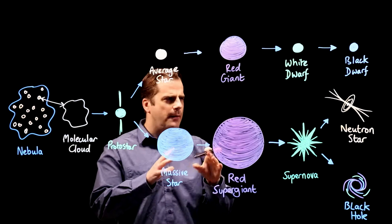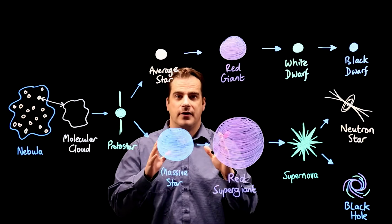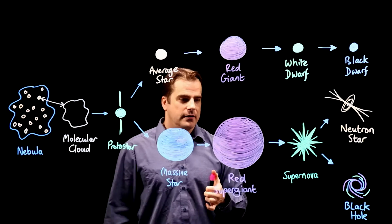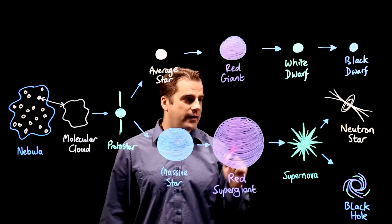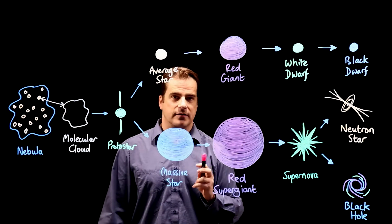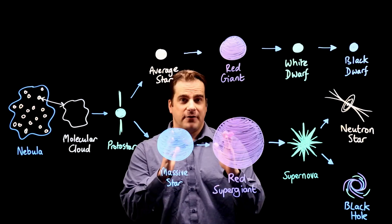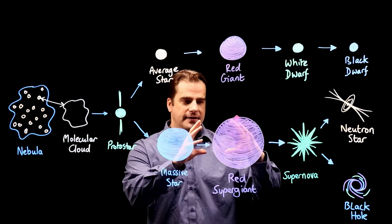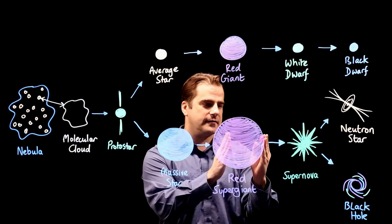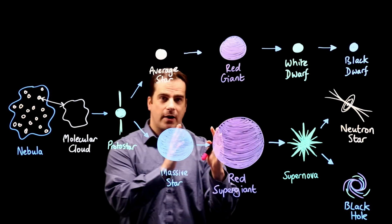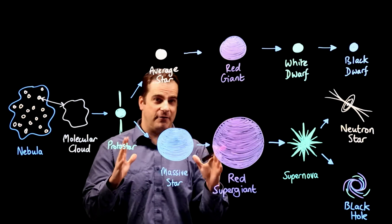Betelgeuse is about, they think 12 or 15 times more massive than the sun. So it's not big enough to be a black hole one day, but it will end up as a neutron star. And it's very big. If you placed Betelgeuse at the center of our solar system, its radius would reach about Jupiter. So it's very large.